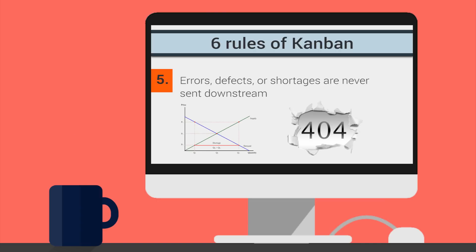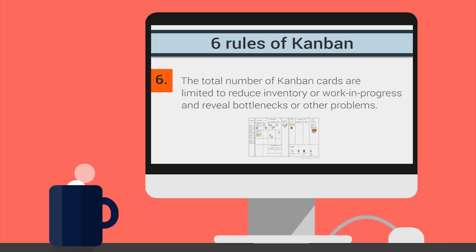Number five: errors, defects, or shortages are never sent downstream. Number six: the total number of Kanban cards are limited to reduce inventory or work in progress and reveal bottlenecks or other problems.